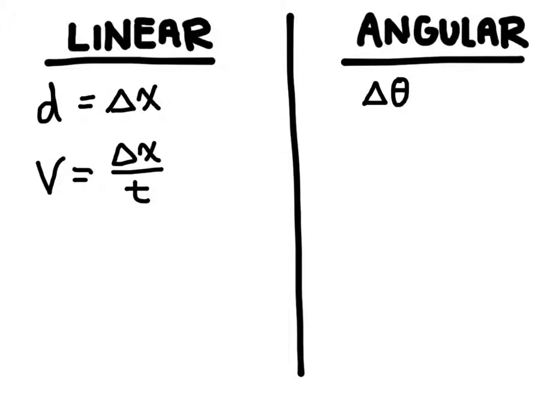When we're talking about angular velocity, we can calculate it using delta theta over time. So it looks very similar. Instead of V, we use the symbol omega. We use a lowercase omega.